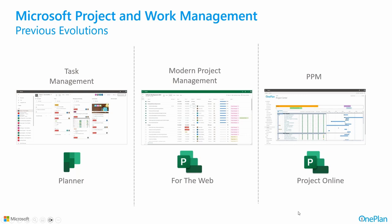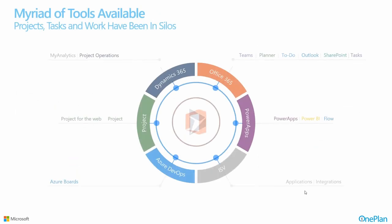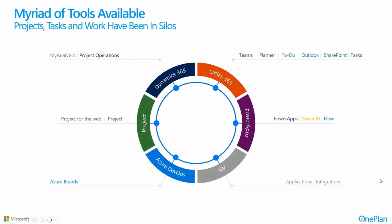Since around 2020, both Microsoft Project on the desktop and Project for the Web have been available. Work management tools within Microsoft have grown — in Office 365 there's Planner, To-Do, Outlook tasks, SharePoint Lists; in Power Apps you can build custom work item apps; Azure DevOps has Azure Boards for agile projects; and Dynamics has extended into Project Operations. Tasks exist in different silos and pockets, even within the Microsoft Cloud.